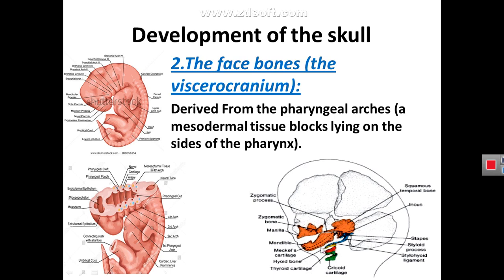The bones of the face, called viscerocranium, are formed by mesoderm of the pharyngeal arches. Pharyngeal arches are mesodermal tissue blocks on the sides of the pharynx of the embryo. These mesodermal tissue blocks will form the bones of the face, which are called viscerocranium, and these bones will be described in detail with the embryology of the head and neck.